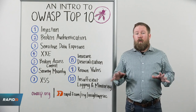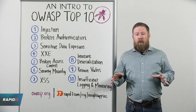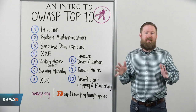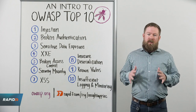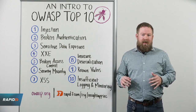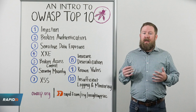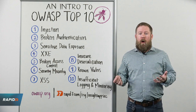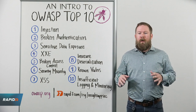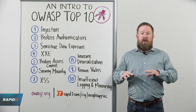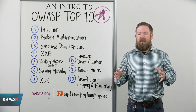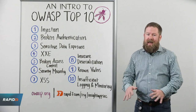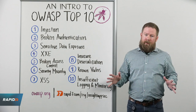A4 and A7 from 2013 were merged into A5, which is now known as broken access control. This happens when authenticated users' access isn't controlled properly, and you end up with a larger than normal amount of elevated access, which increases your attack surface exponentially.